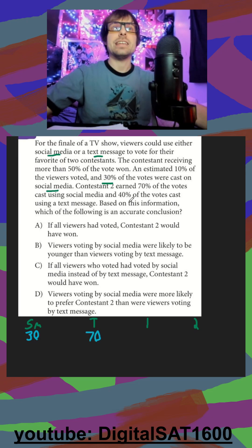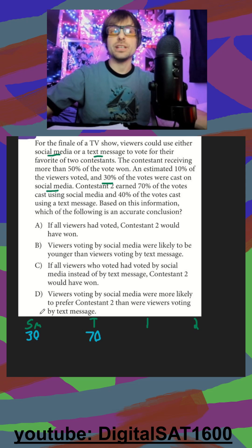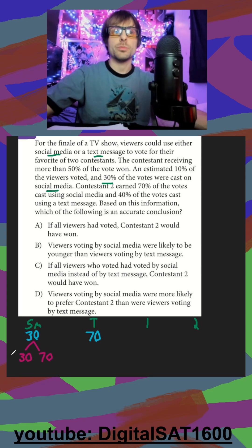Next they tell us that contestant 2 earned 70% of the social media votes. So we can branch this off — if they got 70%, that means contestant 1 got 30%.